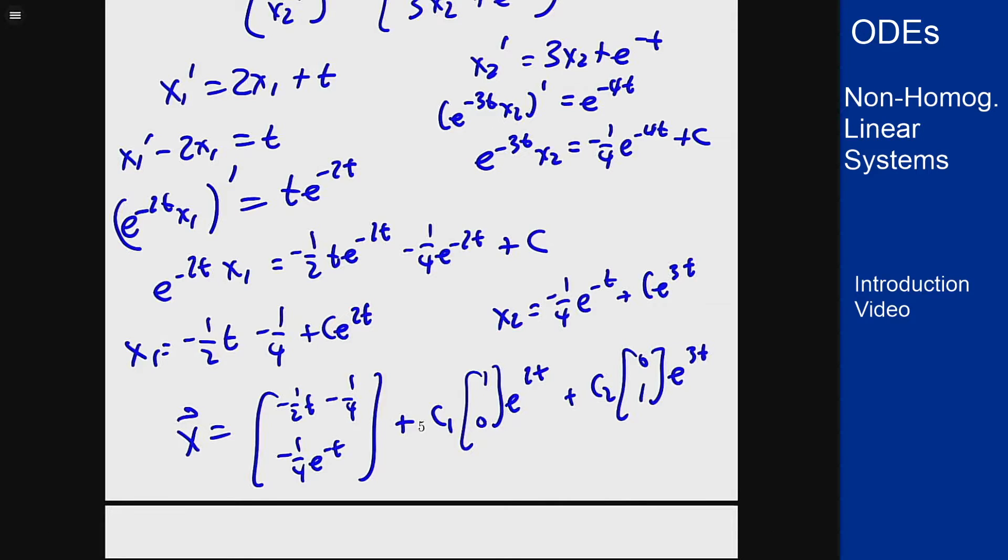This looks like the proper form. This looks like an eigenvector solution for eigenvalue 2. This is the solution for eigenvalue 3. And this part then solves the non-homogeneous problem.